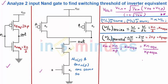And there we also devised a simple law that if W by L of all the transistors which are connected in series is same their final equivalent reduces to W by L divided by N where N is the number of transistors.